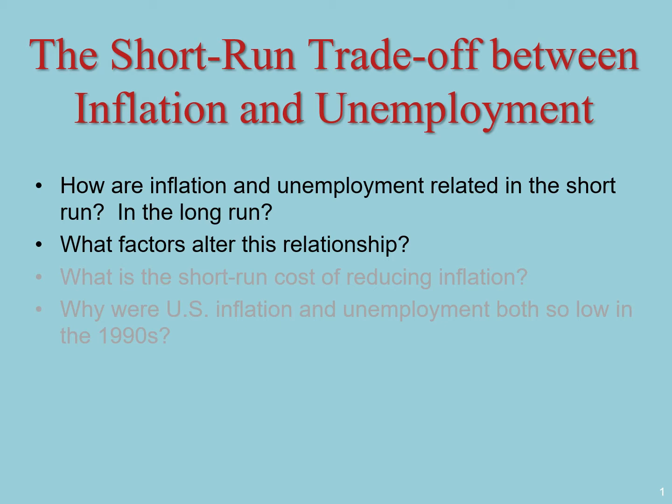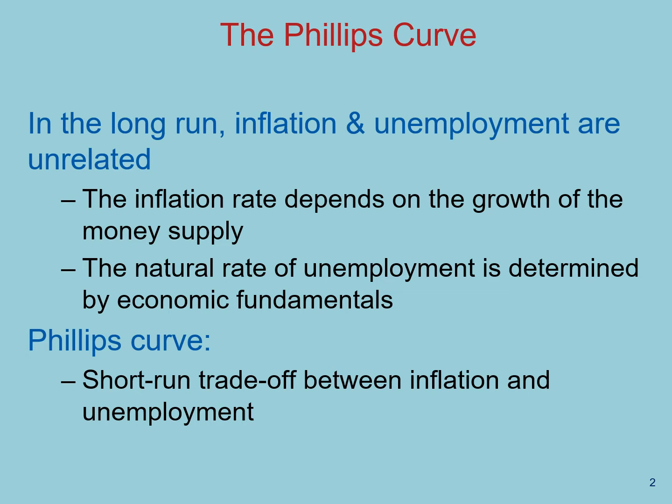In this video, we'll talk about the Phillips curve and the connection between theory and data. In the long run, inflation and unemployment are unrelated. The inflation rate depends mainly on growth of the money supply, while the natural rate of unemployment depends on the process of job search and the frictions in the labor market, like minimum wages, efficiency wages, and so forth. The aggregate demand-aggregate supply model can explain why there is a short-run trade-off between inflation and unemployment. We'll call that trade-off the Phillips curve.